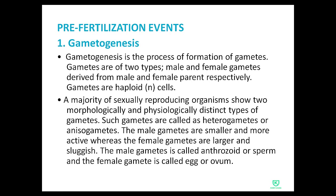The first pre-fertilization event is gametogenesis. Gametogenesis is the process of formation of gametes. Gametes are of two types — male and female — derived from male and female parents respectively. Gametes are haploid cells, meaning their chromosome number is n.